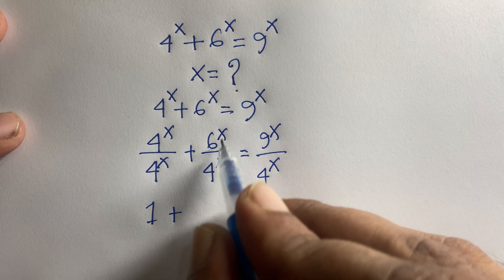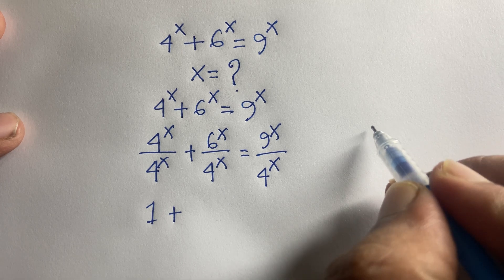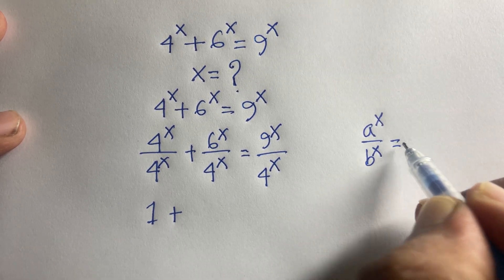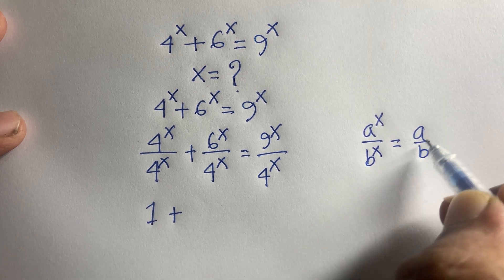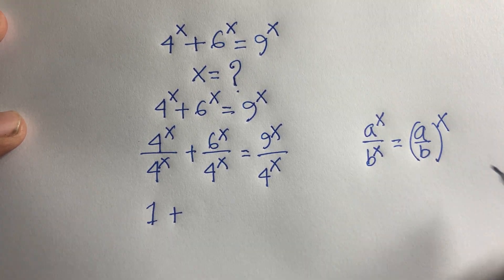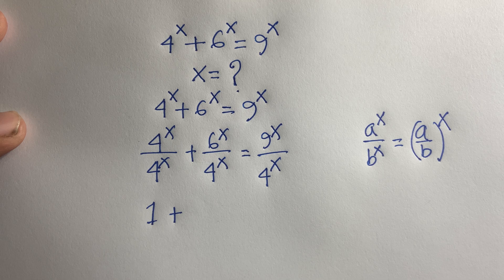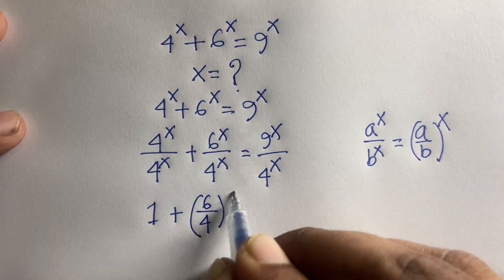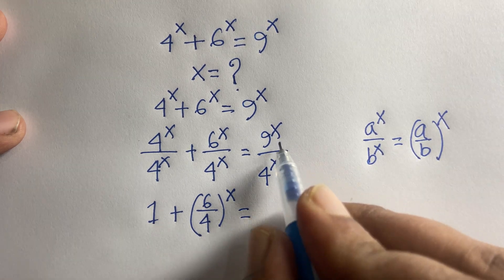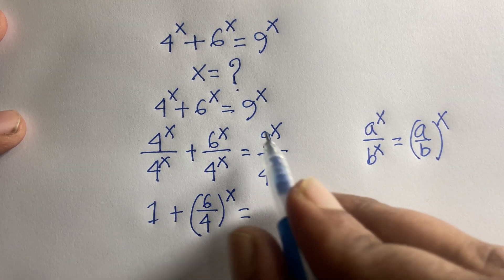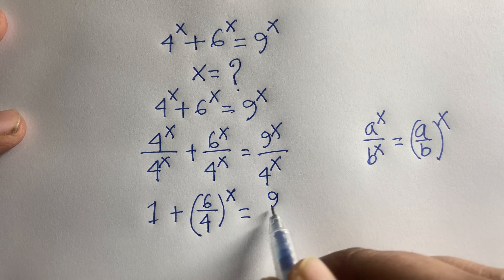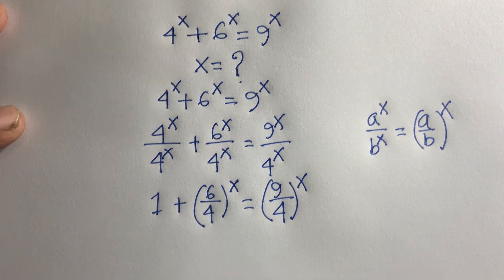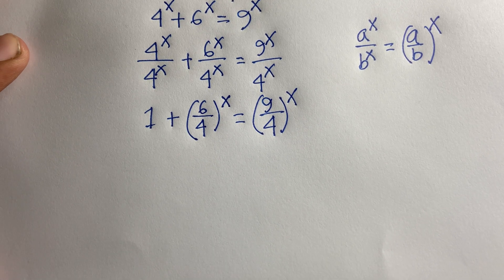The exponent is the same, and we know that a to the power x over b to the power x is equal to (a over b) to the power x. According to this rule, 6^x over 4^x becomes (6/4)^x, and 9^x over 4^x becomes (9/4)^x. So the equation becomes 1 plus (6/4)^x equals (9/4)^x.